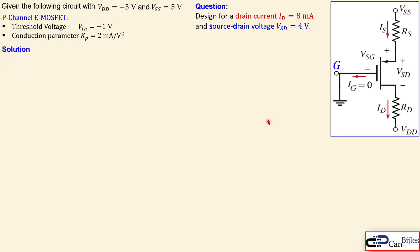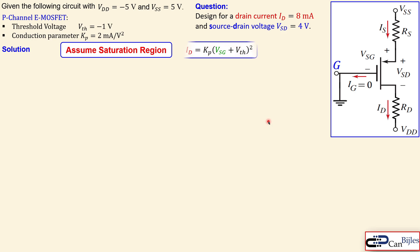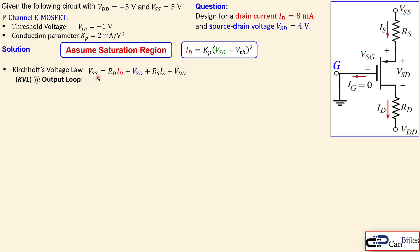We assume saturation region of operation. In saturation, the drain current is given by the standard expression and will be a constant value. Applying Kirchhoff's Voltage Law around the output loop from VSS to VDD, we get: VSS = RD·ID + VSD + RS·IS + VDD.